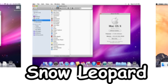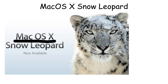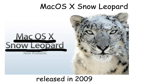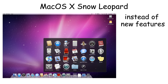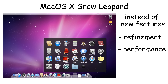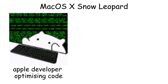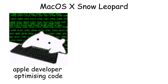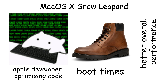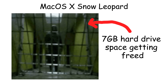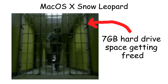Mac OS X Snow Leopard was released in 2009 with a different philosophy from previous updates. Instead of adding flashy new features, Snow Leopard focused entirely on refinement, performance, and stability. Apple optimized the system code, resulting in faster boot times and better overall performance. It also freed up around 7GB of hard drive space.